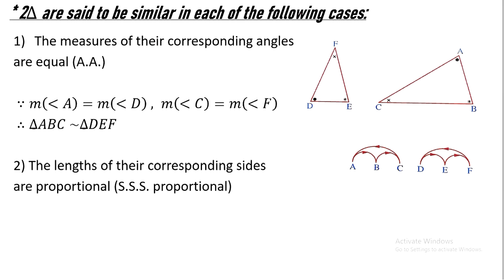To write this as a proof: since measure of angle A equals measure of angle D, and measure of angle C equals measure of angle F, therefore triangle ABC is similar to triangle DEF. Case two (SSS): the lengths of their corresponding sides are proportional — AB/DE = BC/EF = CA/FD.